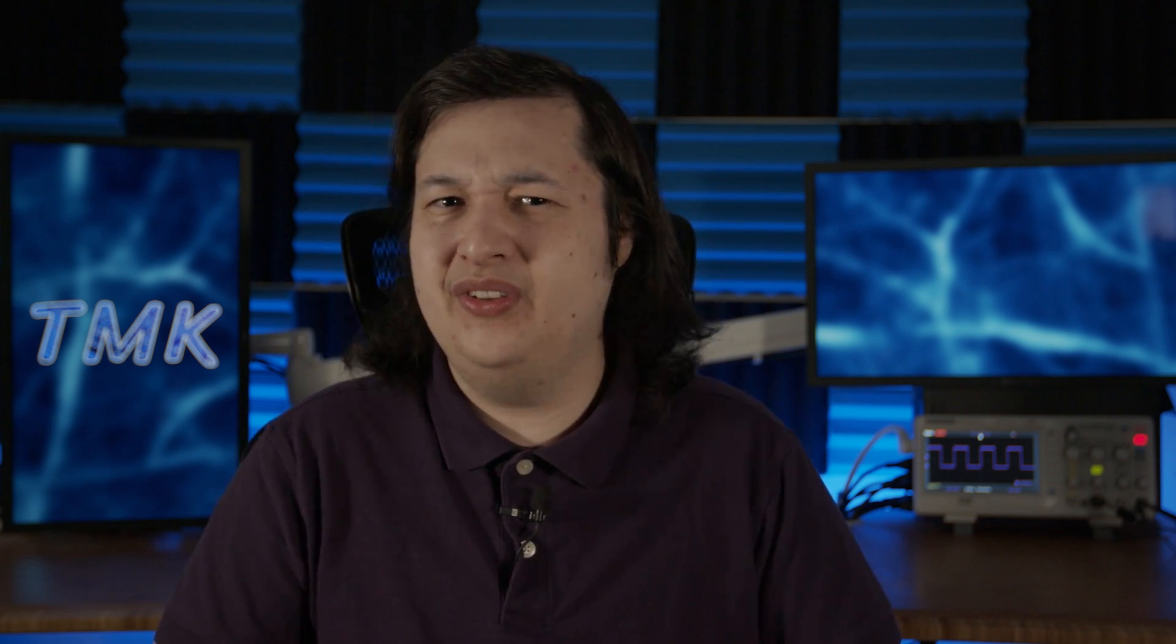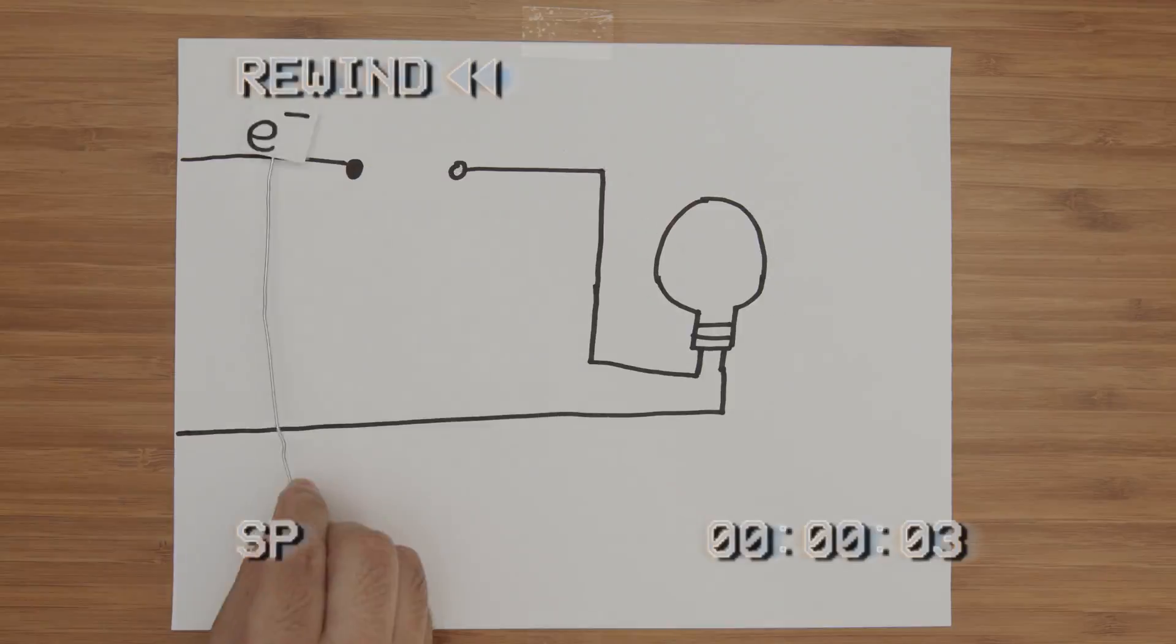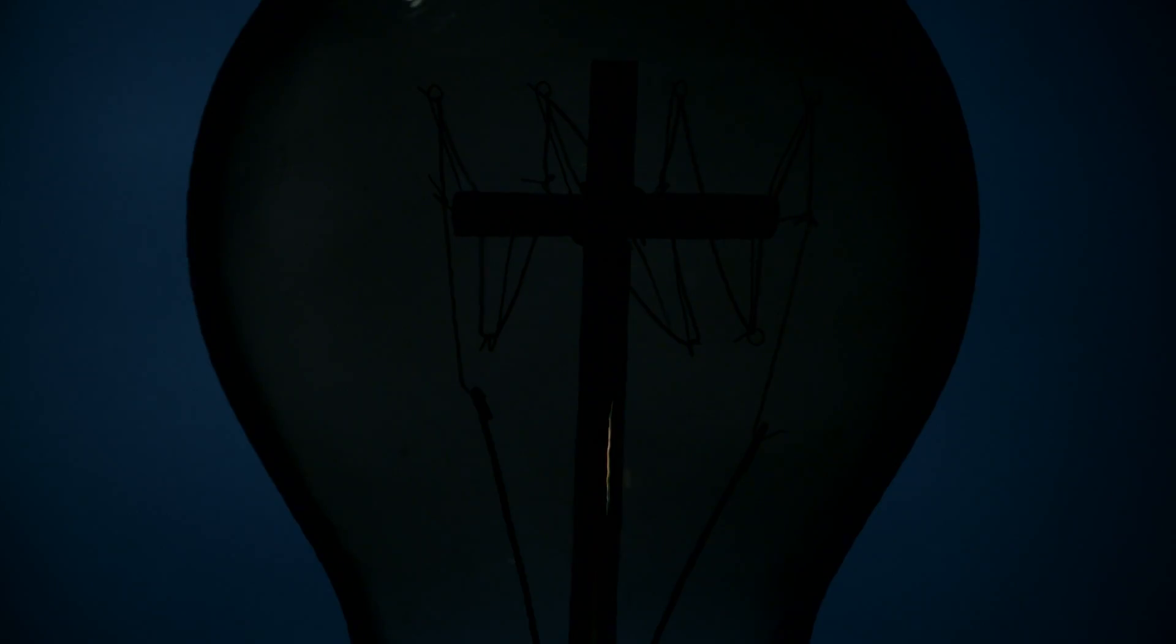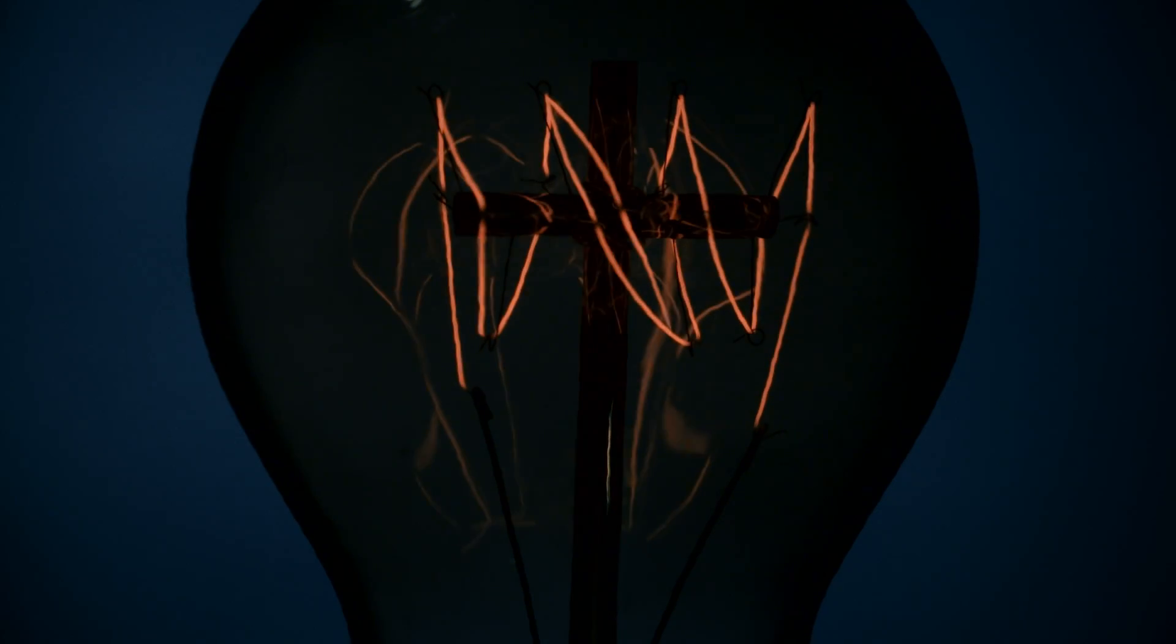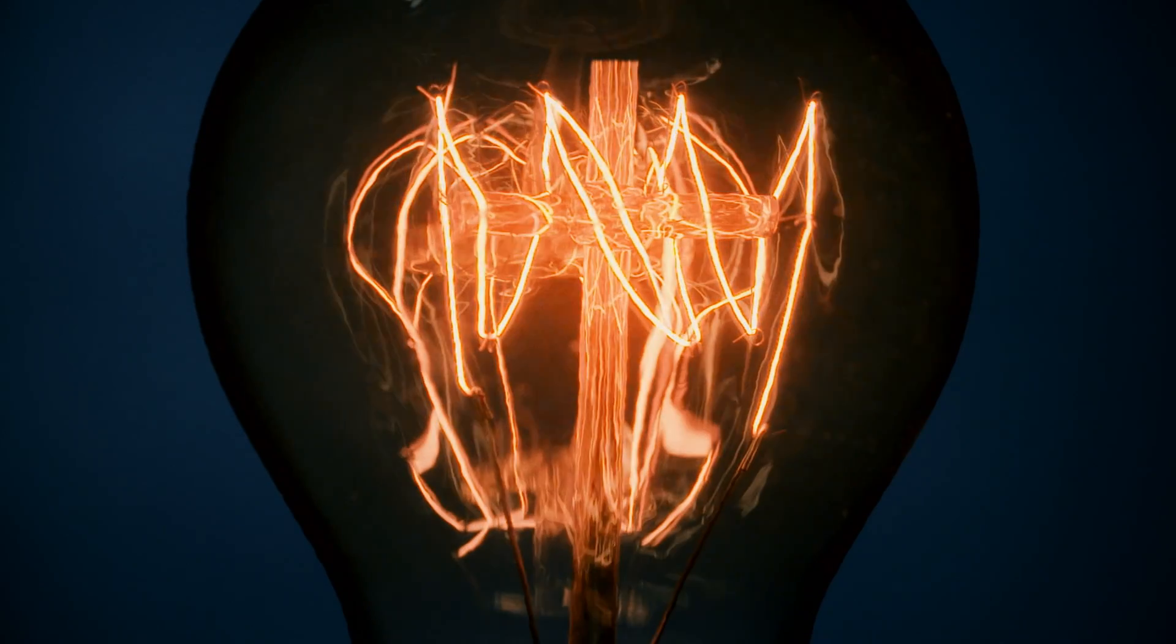let's rewind and look at that lightbulb circuit we had originally. Looking closely at the inside of a lightbulb, we can see that it has filament that slows down the electrons and emits heat.